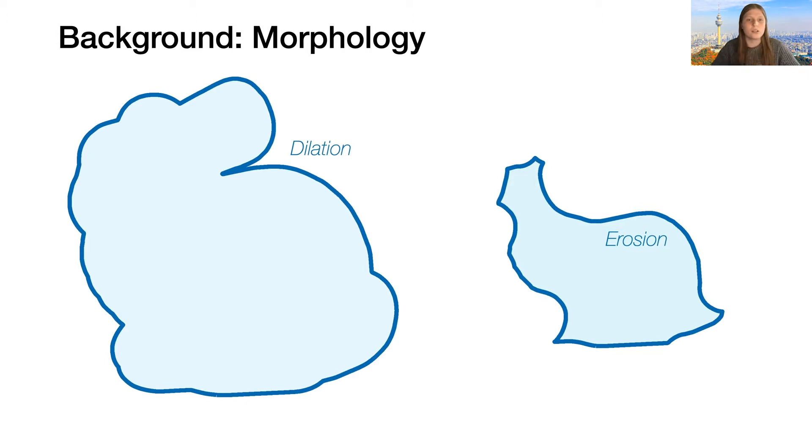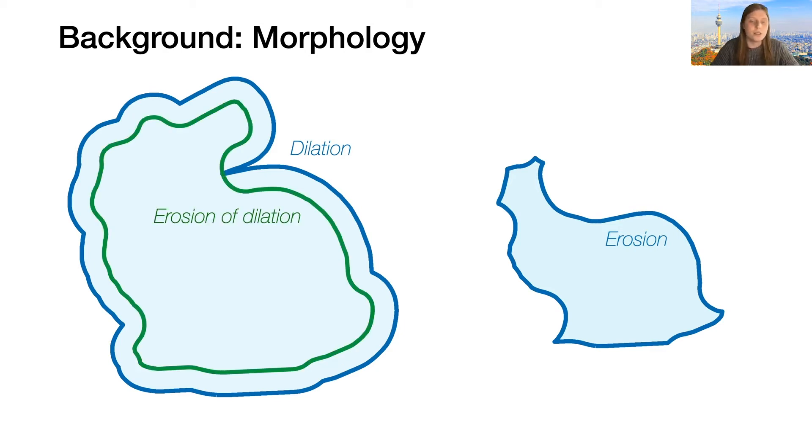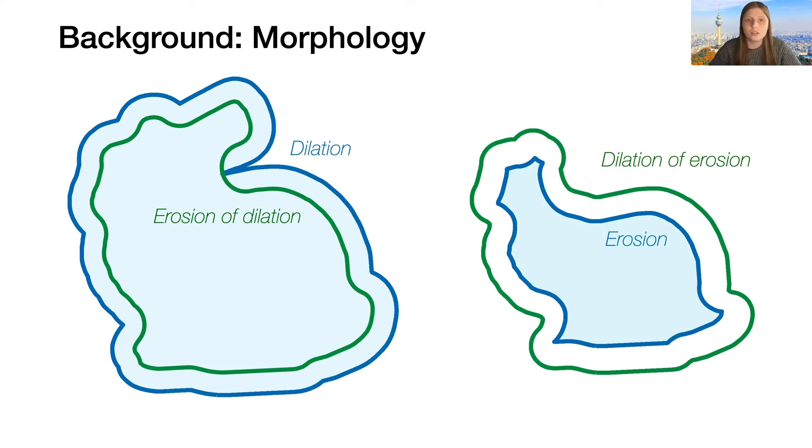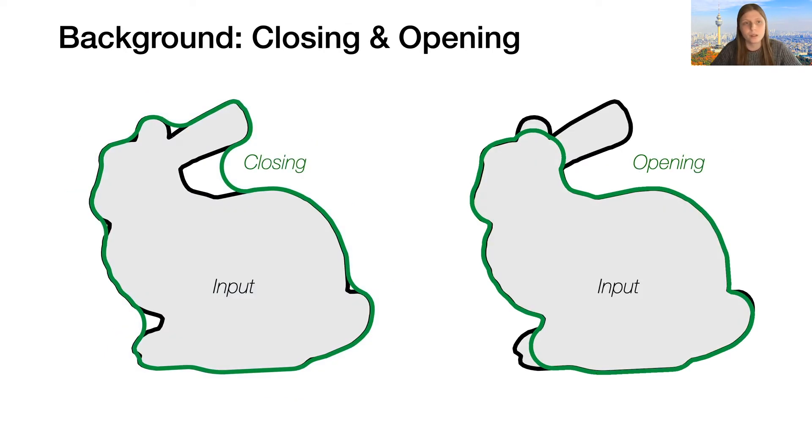Now we can take the erosion and dilation as new input shapes on their own, and we can, for instance, take the one on the left and do its erosion, leaving us with something like this green curve. And similarly, we can do the dilation of the eroded shape to give this. Now, note that these are two different operations because the erosion and dilation are not commutative. So these are two distinct operations, which we call the closing of the input shape and the opening of the input shape. The closing is the erosion of the dilation and the opening is the dilation of the erosion.